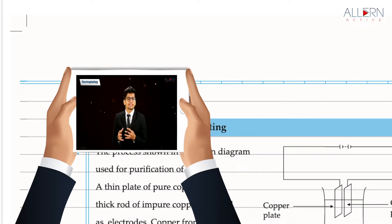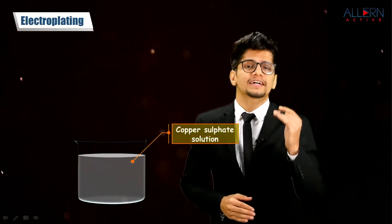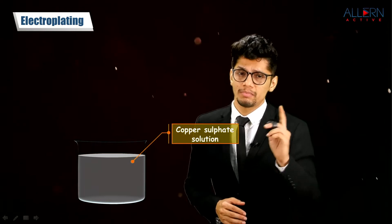Let us do the electroplating experiment first and then we'll understand the definition of electroplating. First of all, in a beaker we are taking a copper sulfate solution.